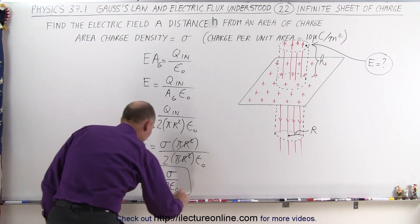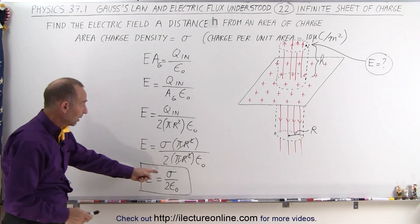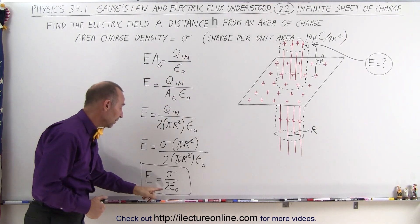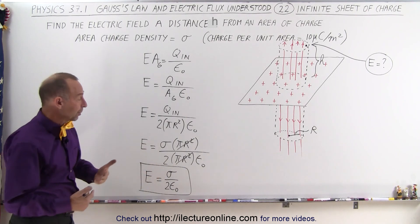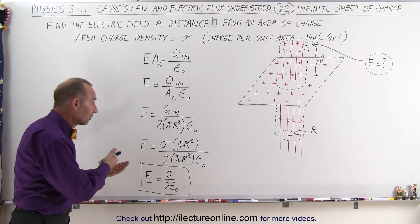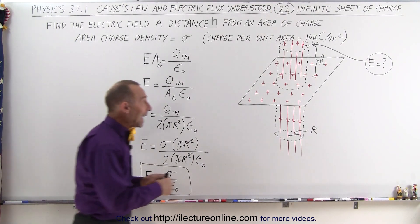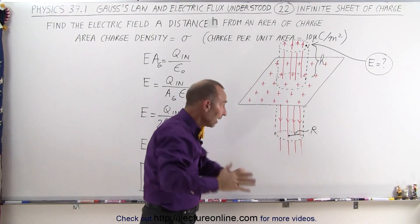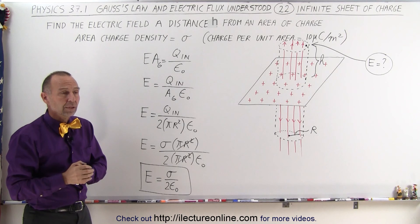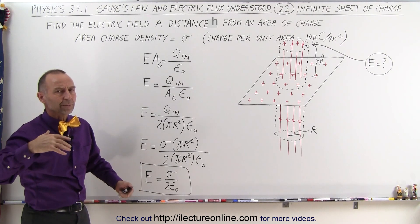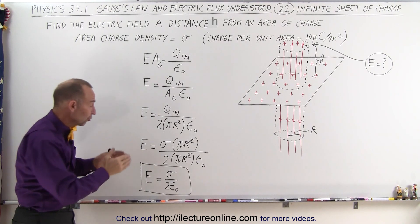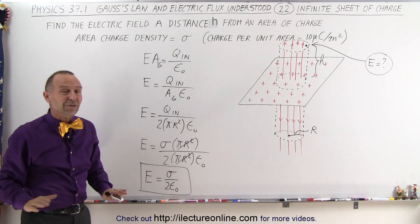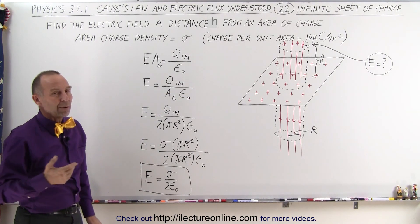This tells us that the strength of the electric field at any distance away from the infinite sheet of charge is equal to sigma divided by two epsilon sub naught. Sigma is simply a constant given by the problem, and epsilon sub naught is the permittivity of free space. Remarkably, the magnitude of the electric field does not depend on how far away you are — a mile away, 10 miles away, or 2 millimeters away, the strength is exactly the same.